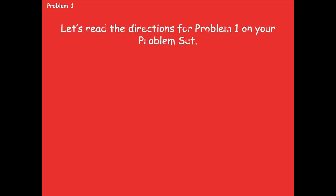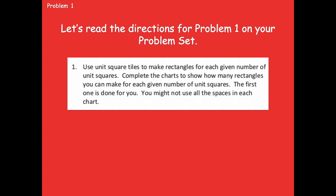So let's start with problem one. Let's read the directions: use unit square tiles to make rectangles for each given number of unit squares. Complete the charts to show how many rectangles you can make for each given number of unit squares. The first one is done for you. You might not use all of the spaces in each chart — sometimes you might only use one or two, and some of them you might use all three.